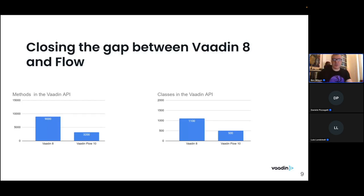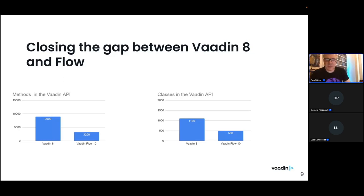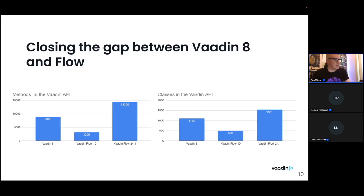There was significant work just to get the first version of Flow out. Back in 2018 when Flow 10 was released, it was very hard to find equivalents for all the features Vaadin 8 had. Things have changed significantly since then — we're now on Vaadin version 24.2, released today.